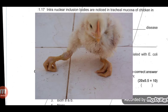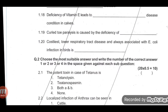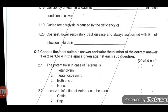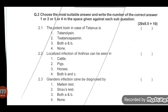Riboflavin is also known as vitamin B2. Question 19: The costliest lower respiratory tract disease, always associated with E. coli infection in birds, is colibacillosis. Now we start with MCQs. Question 21: The potent toxin in case of tetanus is tetanospasmin.